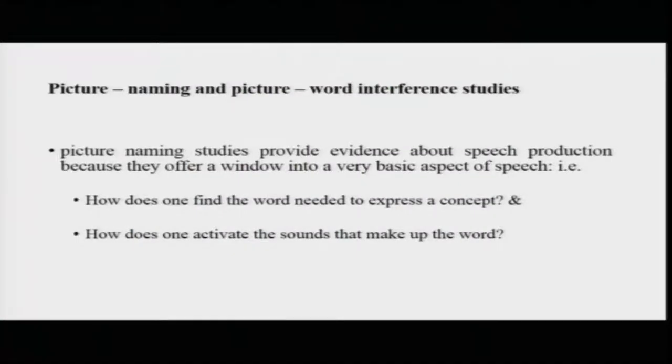We talked about speech errors and the TOT phenomenon. Let us now move to picture naming studies and the picture word interference task. The picture naming studies provide evidence about speech production because they offer a window into a very basic aspect of speech: how do we find the words needed to express a concept? When I am shown a picture of a banana, an apple, or an orange, how do I move from the picture to the sound for 'orange' or 'banana'? How am I making this link possible, and how do I activate the sounds that make up that word?